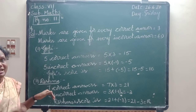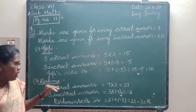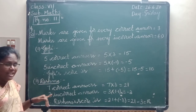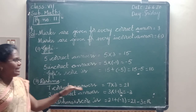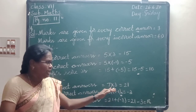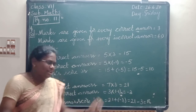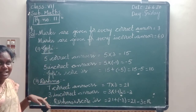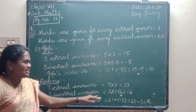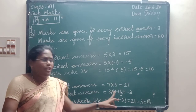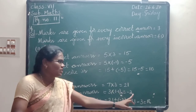Next, Reshma. Reshma attempted 7 correct answers and 3 incorrect answers. Correct answers score: 7 into 3 — 7 threes are 21. Incorrect answers score: 3 into minus 1 equals minus 3.